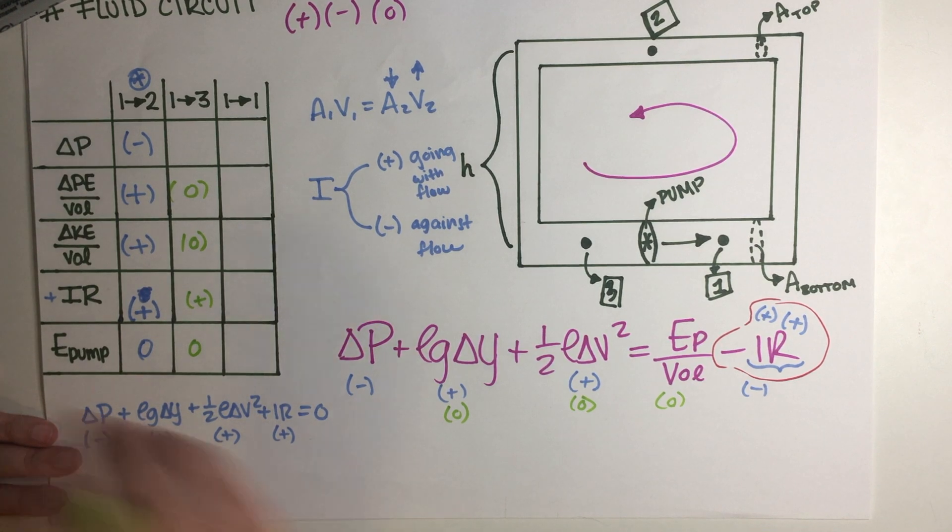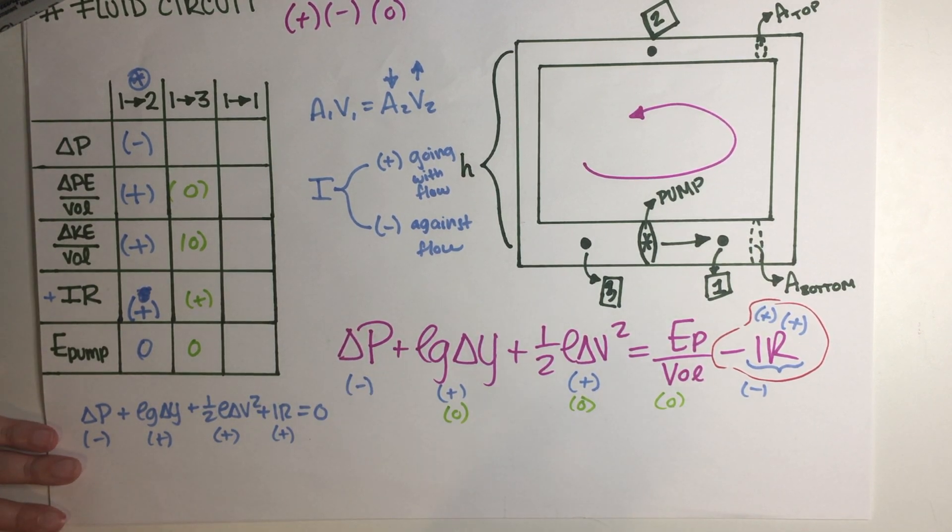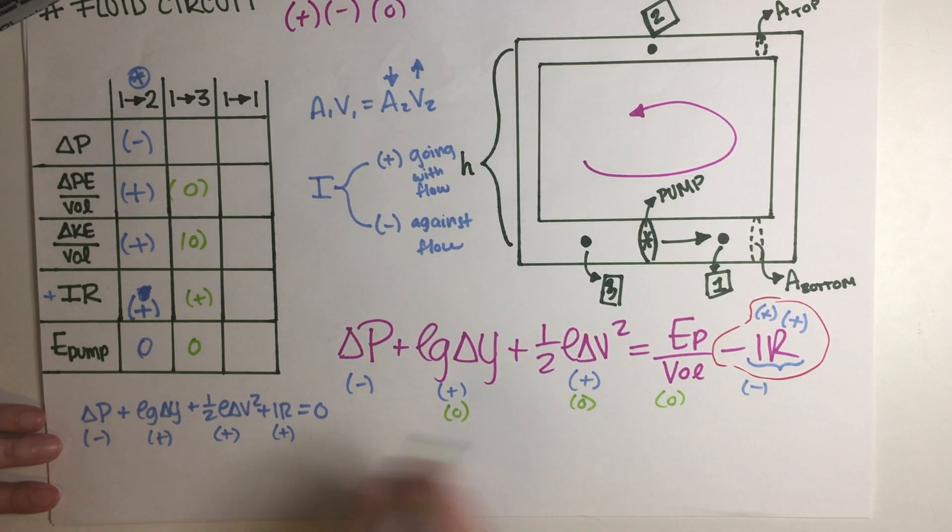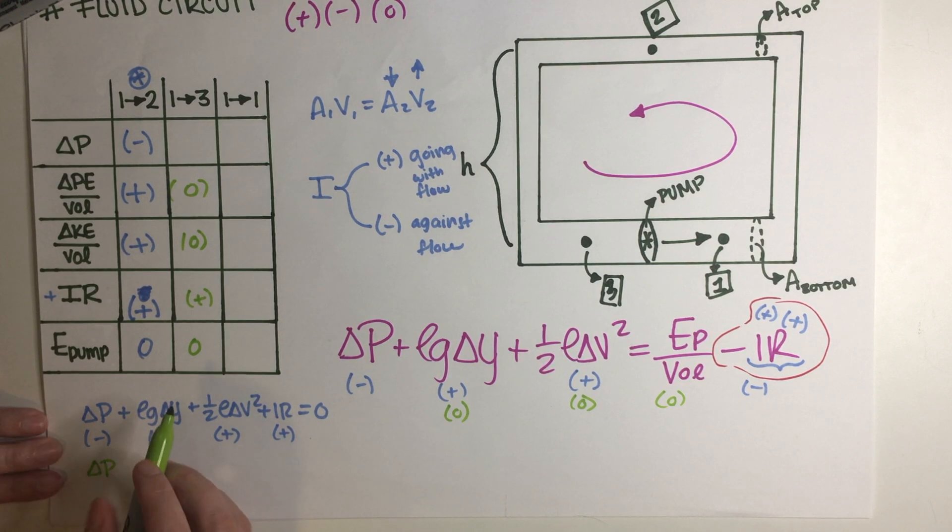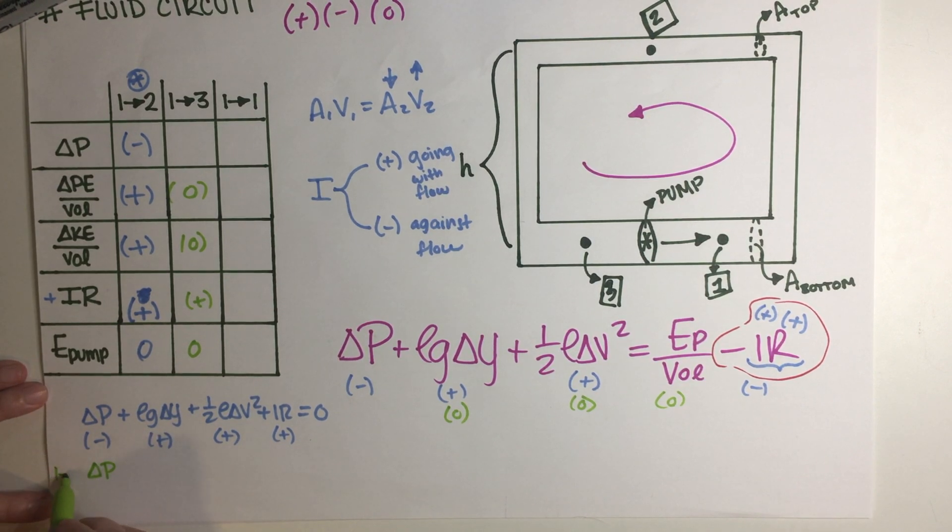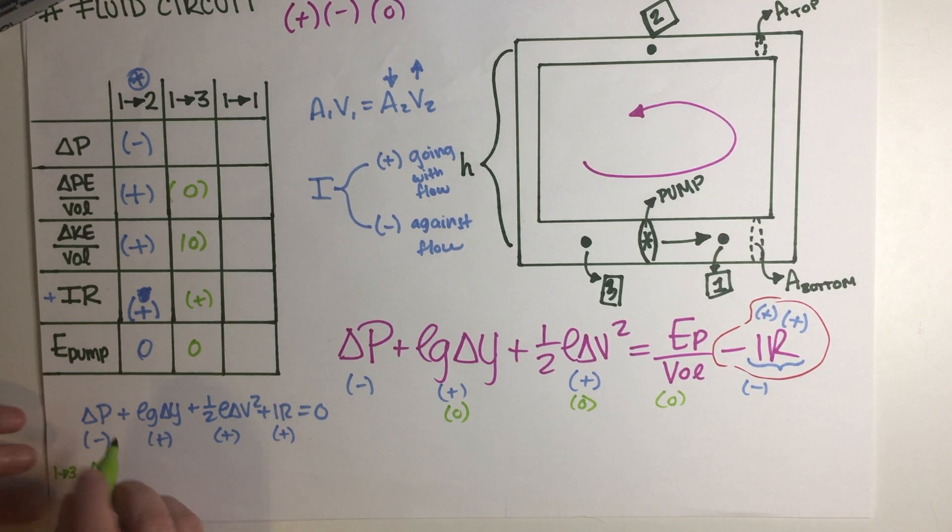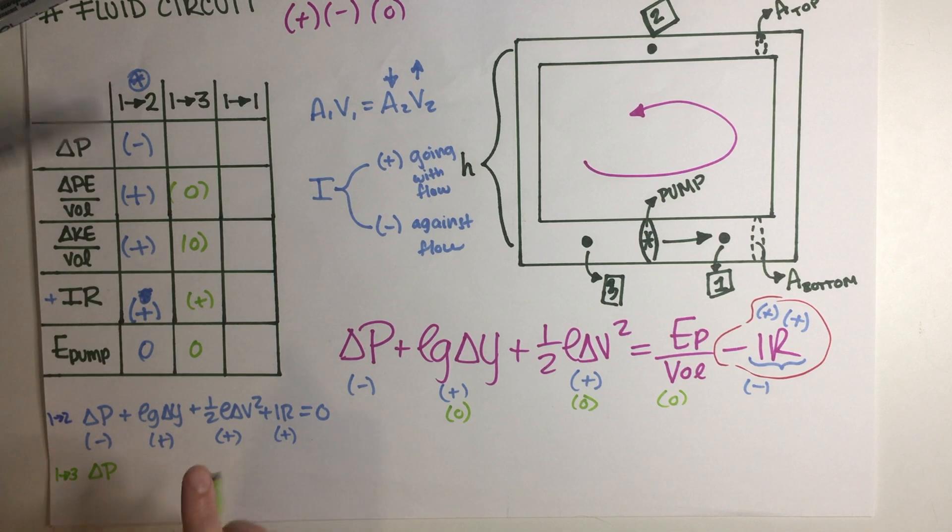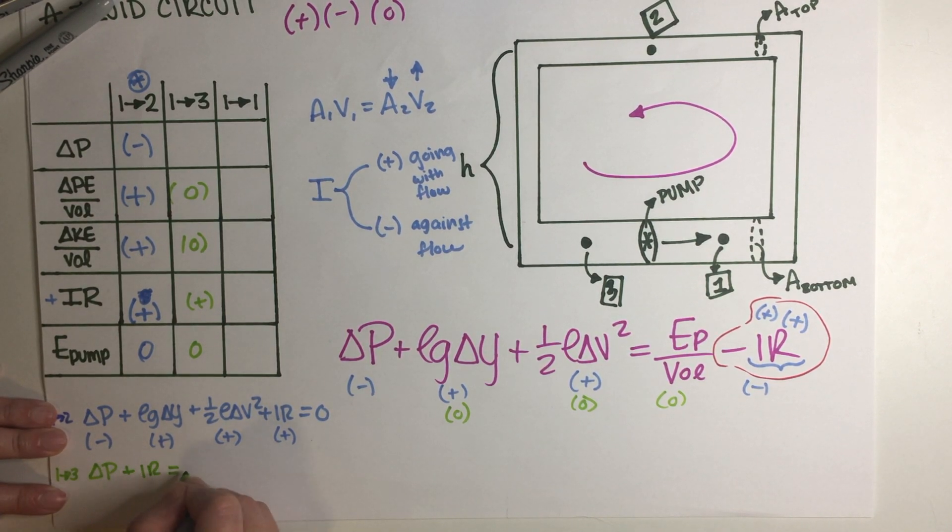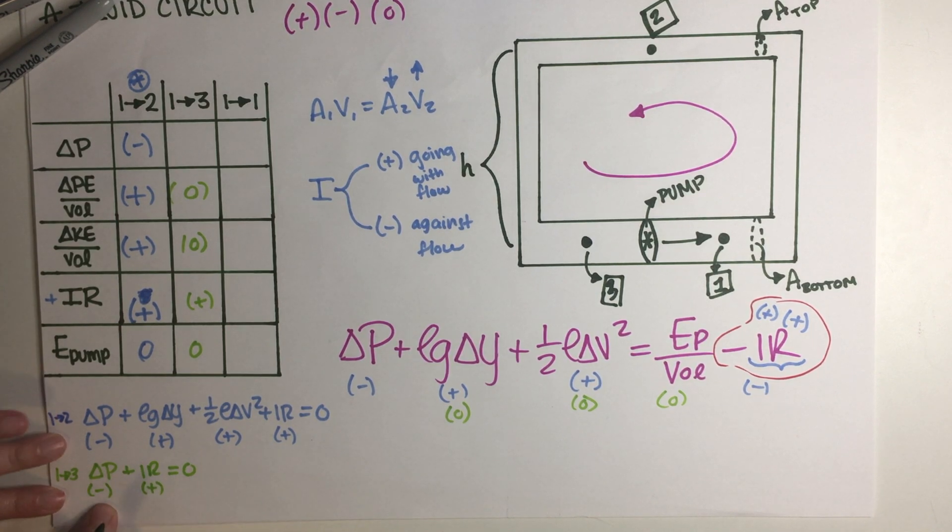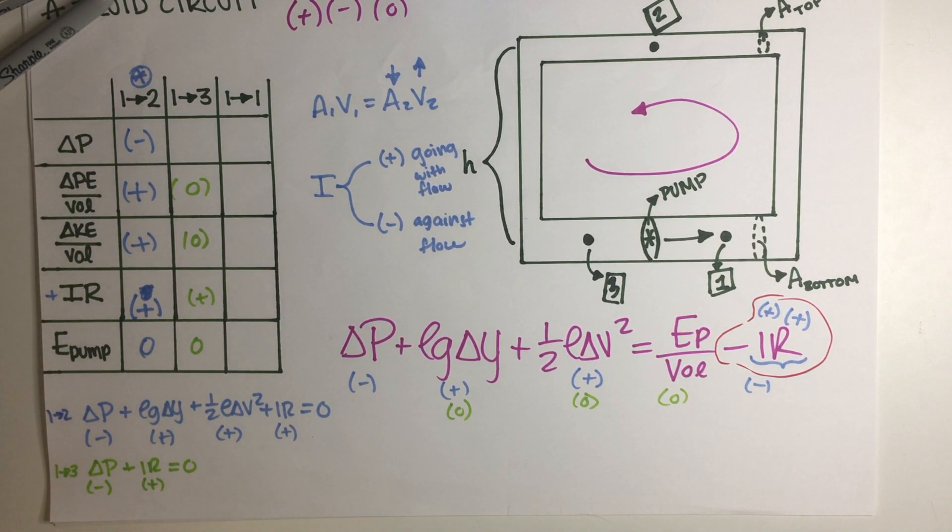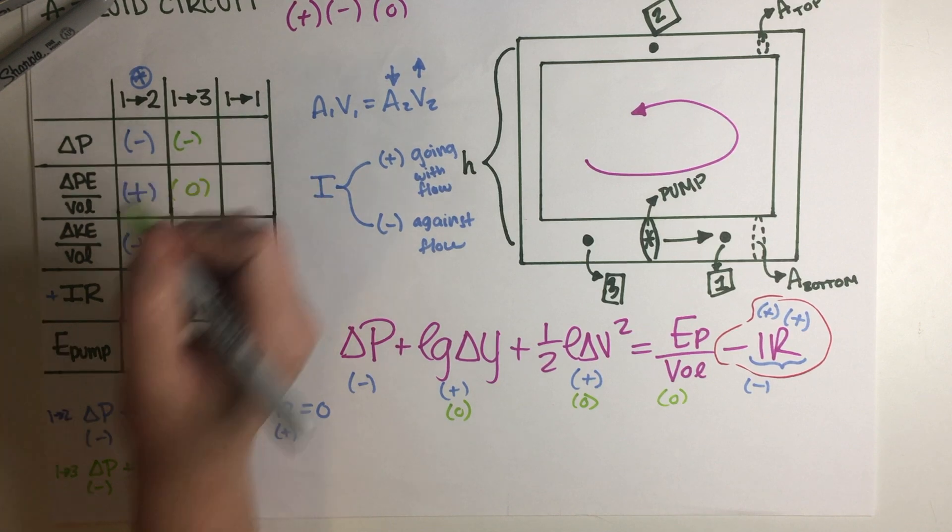And then IR, because we went with the flow, then it's going to also be positive. IR is going to be positive because we went with the flow and resistance is always positive by definition and we don't have a pump like this. So now that we have everything figured out, what would be the sign of delta P?